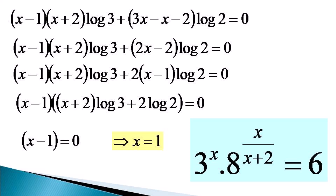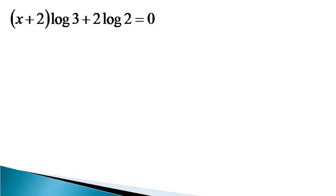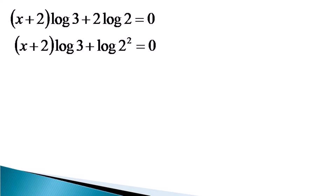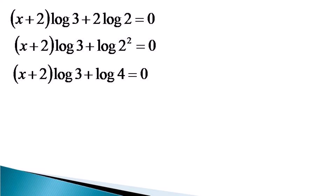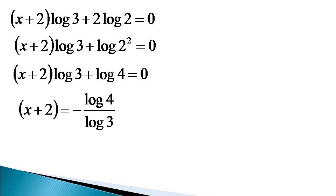Now we look for the second solution. We consider the second factor: x plus 2 times log 3 plus 2 log 2, equal to 0. Here we use the multiplication law of log on the second term, so 2 log 2 becomes log 2 squared, which becomes log 4.